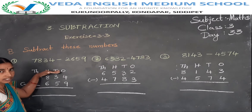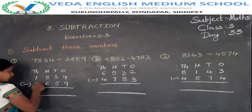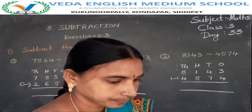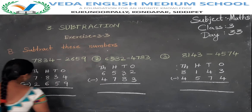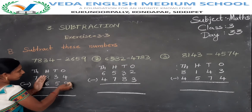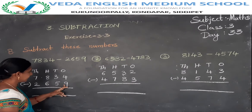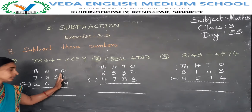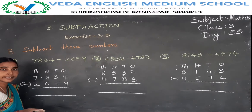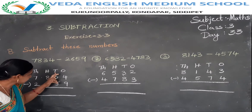7834 minus 2659. Now do the subtraction. First of all, get into the subtraction in the ones place. What is given in the ones place? 4 minus 9. But this is not possible — 9 is greater than 4. So now we take a value from the tens place to the ones place: 10 plus 4.